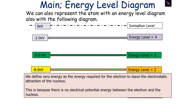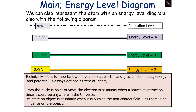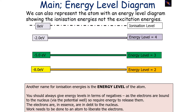We define 0 eV as the energy required for the electron to leave the electrostatic attraction of the nucleus, because at that point there's no electrical potential energy between that free electron and the nucleus. This is very important when you look at electrical and gravitational fields: energy and potential are always defined as 0 at infinity. From the nucleus's point of view, the electron is at infinity when it leaves its attraction, since it could be anywhere in the universe. We state that an object is at infinity when it's outside the non-contact field because it has no influence on the object. Another name for the ionisation energies is the energy level of an atom, and you should always give energy levels in terms of negatives, as the electrons are bound to the nucleus via potential wells and require energy to release them.